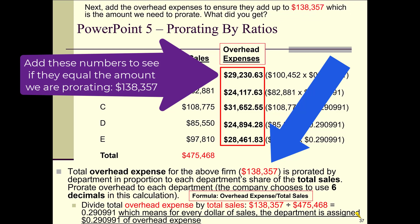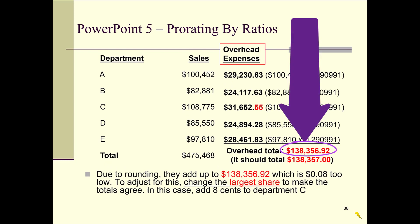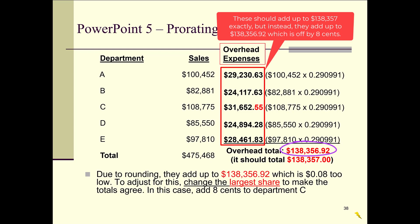When you add up the overhead expenses, you get something close to $138,357 but not exactly. You get $138,356.92 — so we're eight cents short.